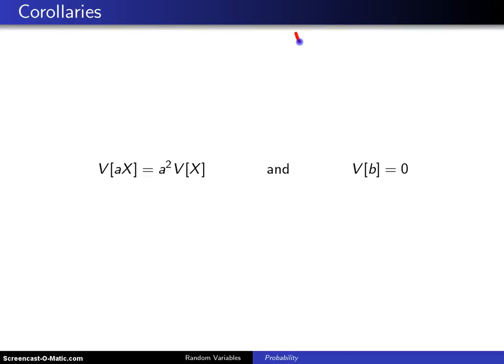The previous slide had the result variance of AX plus B is equal to A squared variance of X. On this particular slide we're going to look at two special cases. The first special case is when B equals 0 and the second special case is when A equals 0.